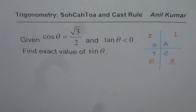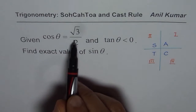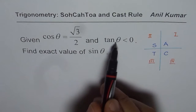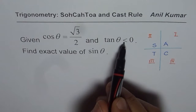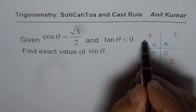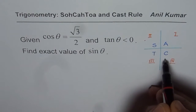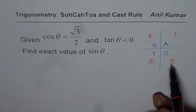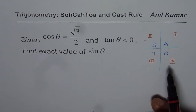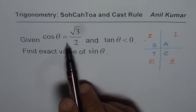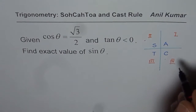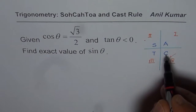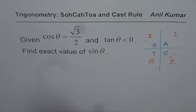Now, we are given that cos θ = √3/2 and tan θ is less than zero, meaning tan θ is negative. Tan θ being negative means we could be in quadrant two or quadrant four. But we are also given that cosine θ is positive, which narrows it down.